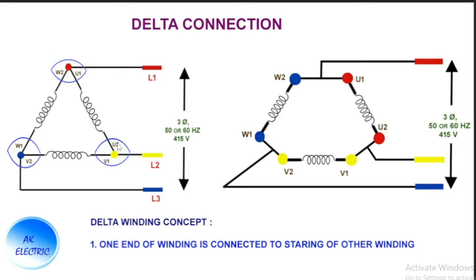Here W2 and U1 are marked as one set, U2 and V1 as the second set, and W1 and V2 as the third set. For the first set, U1 and U2, there are two ends: a starting end and an ending end. U2 is the ending end, and it is connected to the starting end of the next winding V1. V2, the ending end of the second set, is connected to the starting end W1 of the third set. So in delta winding, one end of a winding is connected to the starting end of the next winding.